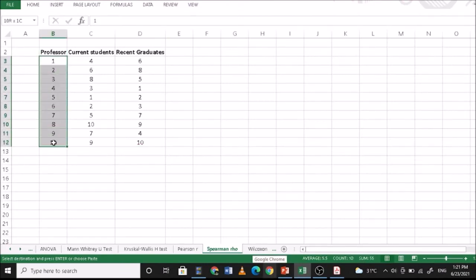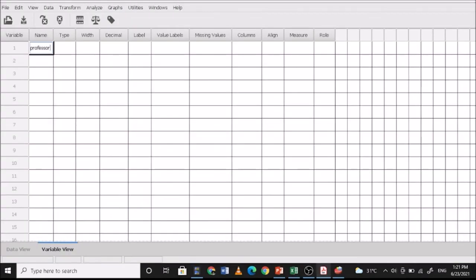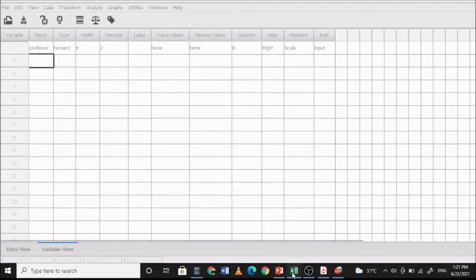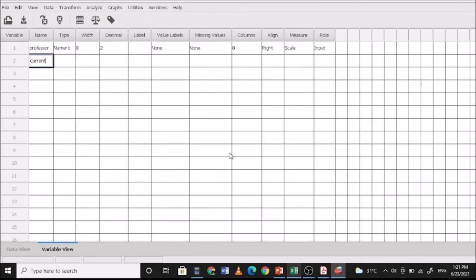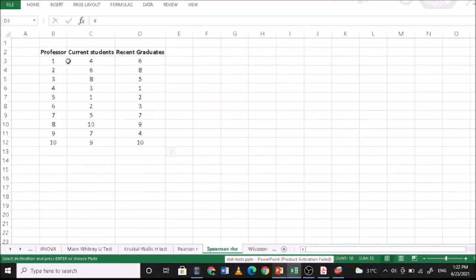These are the professors and the current students' ranking and the recent graduates' ranking. In PSPP, we have professor, current students, recent graduates. Decimal value is 0 and 0. This is nominal since that's the professor. This is ordinal, and this is ordinal. Then in your data view, it's ranked from 1 to 10. You simply copy this one.